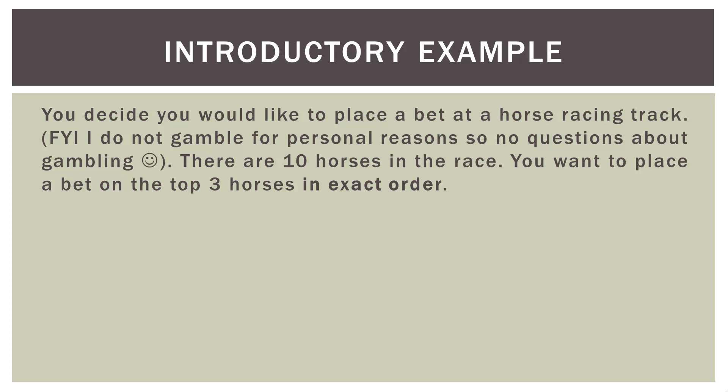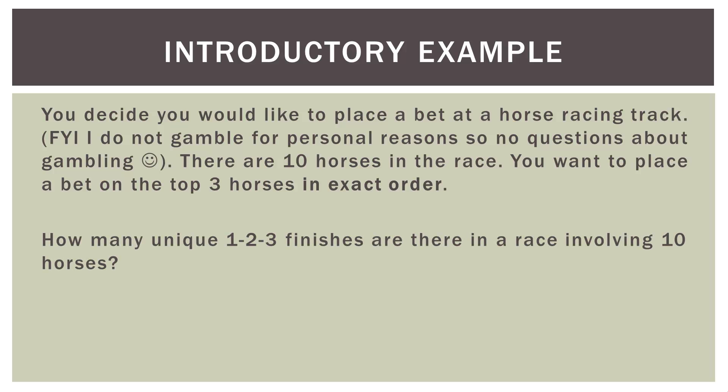You're going to pick the first place horse exactly, the second place horse exactly, and the third place horse exactly. So the question is: how many unique 1-2-3 finishes are there in a race involving 10 horses that you could potentially bet on? You have to not only get the three horses correct, you have to get their exact place correct. The answer is there are 720 unique 1-2-3 finishes. Even if the same three horses finish in different orders, that doesn't count — they have to be in the exact order.